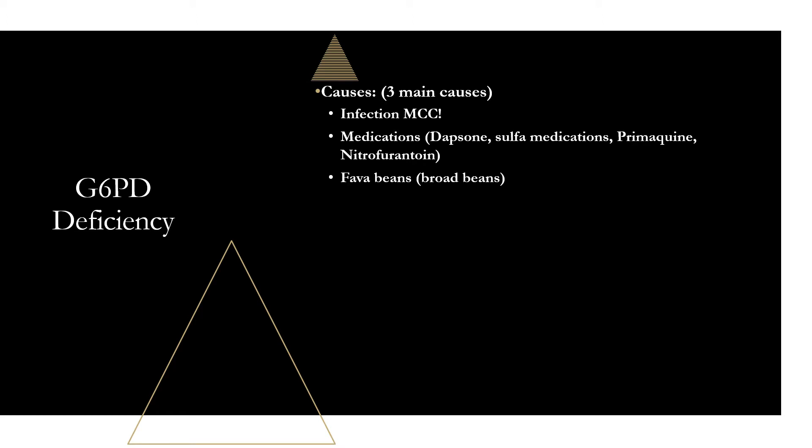Finally, fava beans — also known as broad beans. These contain proteins called vicine and covicine, which prevent the bean itself from rotting. But in the body, they undergo rapid oxidation, leading to oxidative stress. In a normal patient this would be no big deal, but in these patients it's going to lead to episodic hemolytic anemia.